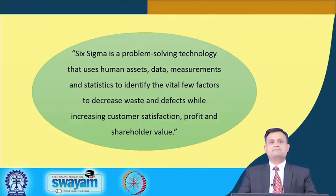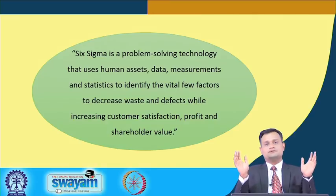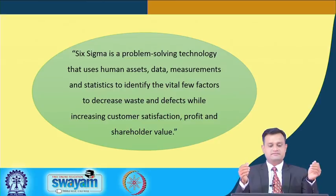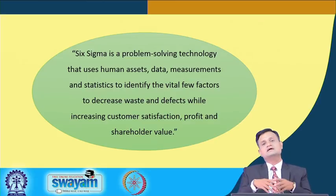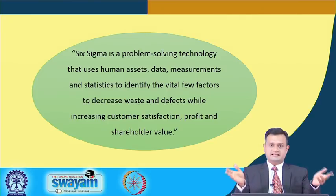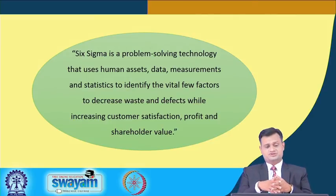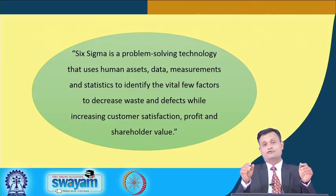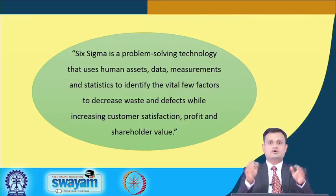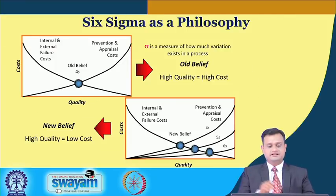In this Lecture 4, we will focus on concepts like what is Six Sigma, what is the shift in quality paradigm, how we recognize the difference between Three Sigma and Six Sigma, what is DPMO (defects per million opportunities), and how we calculate Sigma level in practice. Six Sigma is a problem-solving technology — a philosophy and a compass of tools and techniques for analyzing situations and reducing variability, typically using data, assets, measurements, and statistics to identify the vital few factors causing the problem and focusing on decreasing waste and variability.